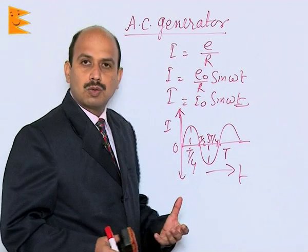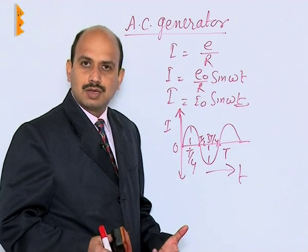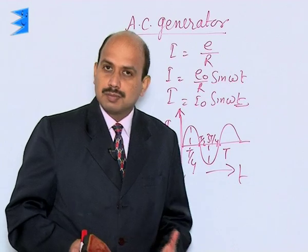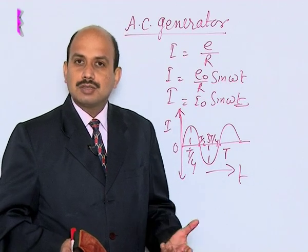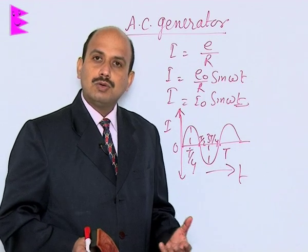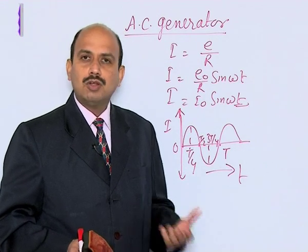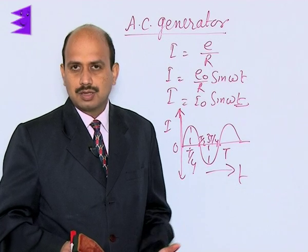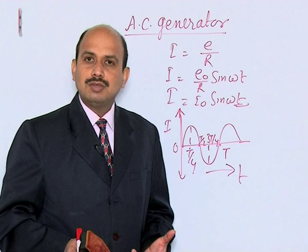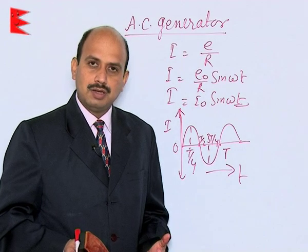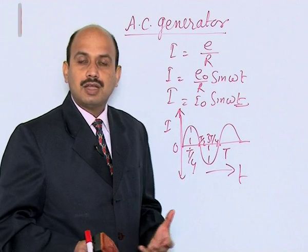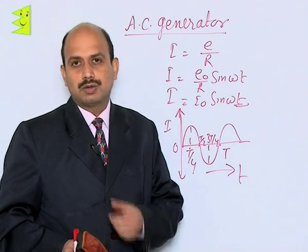By changing the orientation of the coil we get alternating current. If the direction of the current remains fixed and only the magnitude oscillates or changes, that current is known as direct current. If both the magnitude and direction remain fixed, that is also known as direct current or steady current. This is about the AC generator — its principle, working, and construction.